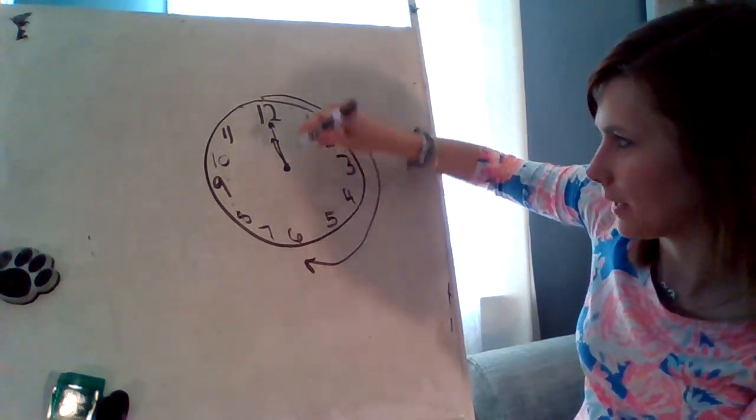Now, boys and girls, I'd like you to make half past 4. Half past 4 — we know that's 4:30. If it was 4 o'clock here, we go halfway around the circle. So now it is 4:30 — that hour hand is in between the 4 and the 5, and that minute hand is down on the 6.